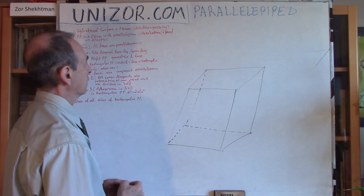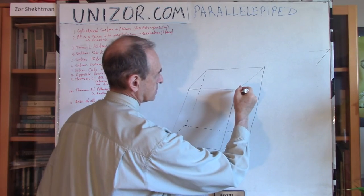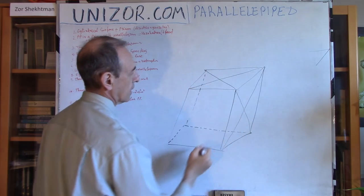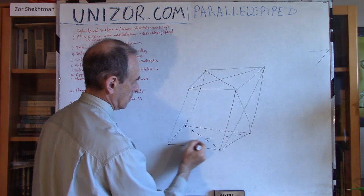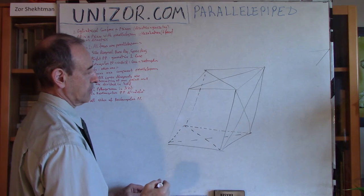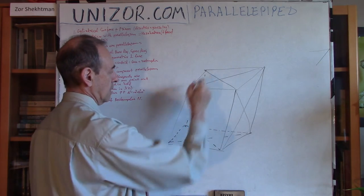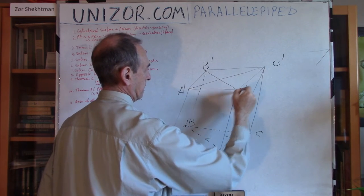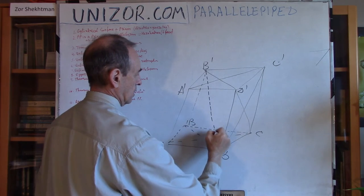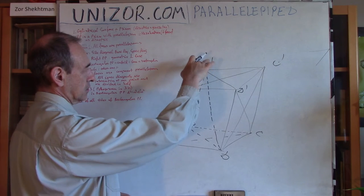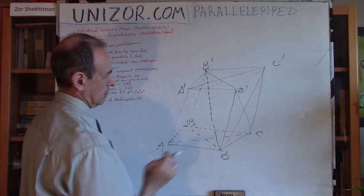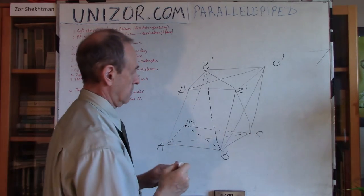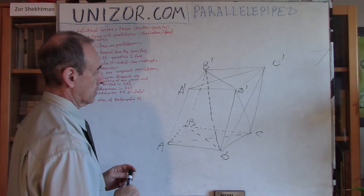We also have diagonals. A diagonal can be a side diagonal — for example, these two diagonals on a side face. A diagonal can be a base diagonal — on the top base or the bottom base. And a diagonal can be a space diagonal, meaning it runs inside the parallelepiped — for example, from B' to D, or from A to C'. These are all space diagonals.